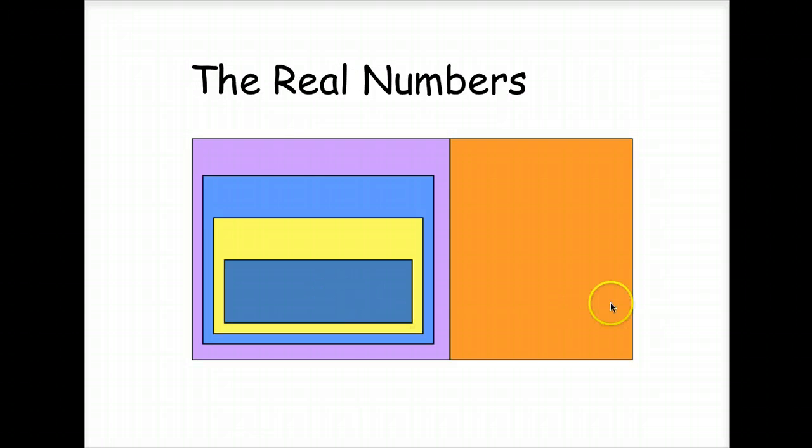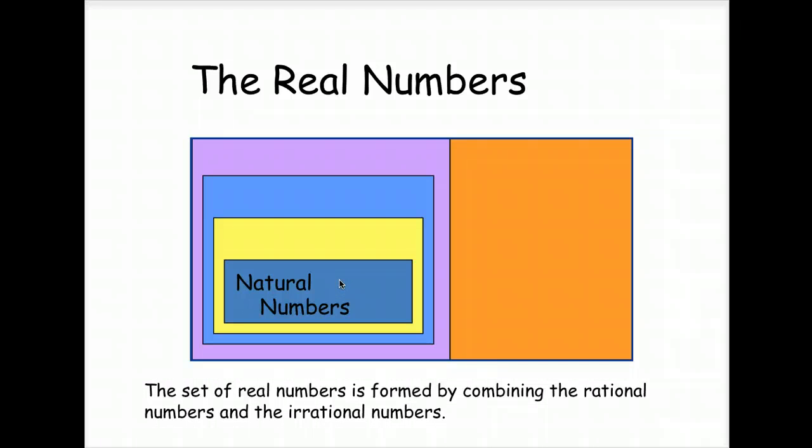Okay, we have another diagram here that we're going to fill in showing how the subsets of real numbers relate to each other. First of all, we're going to start in the inner circle, or the inner square in this case. Those are our natural numbers. If you remember, those are 1, 2, 3, continuing on. Then for the next set, whole numbers, which we add a zero to the natural numbers.